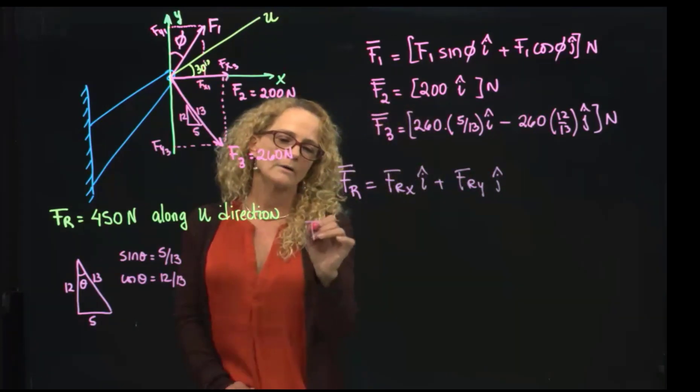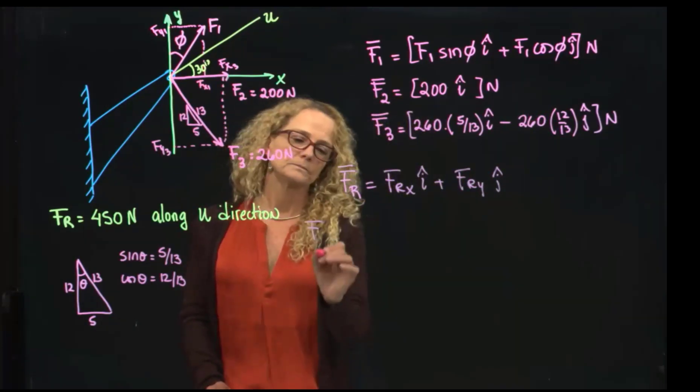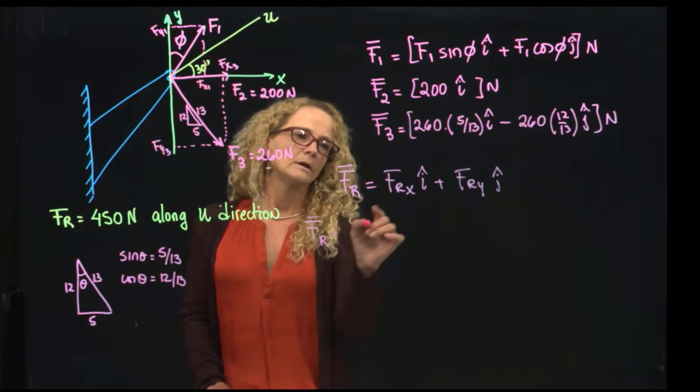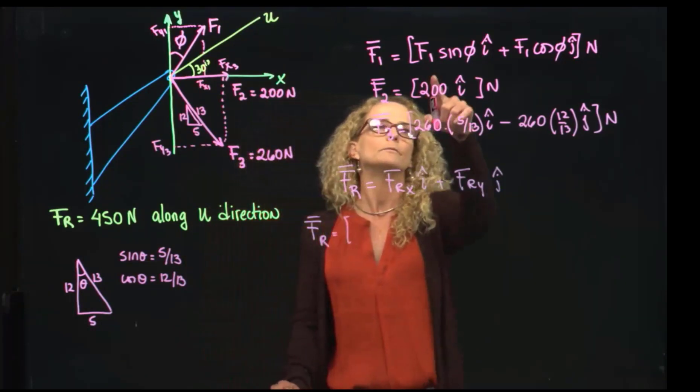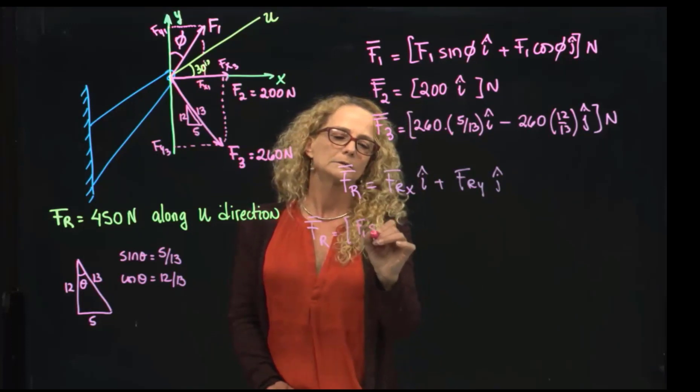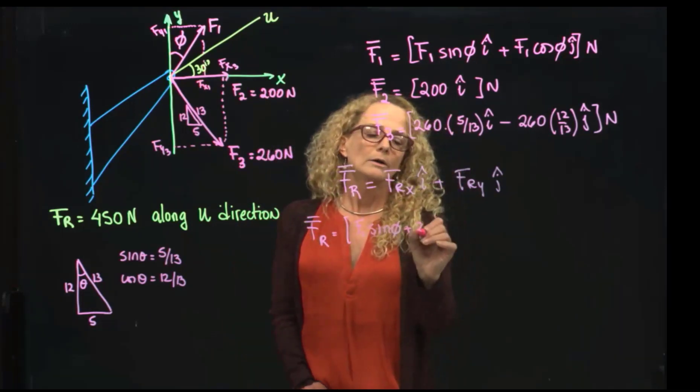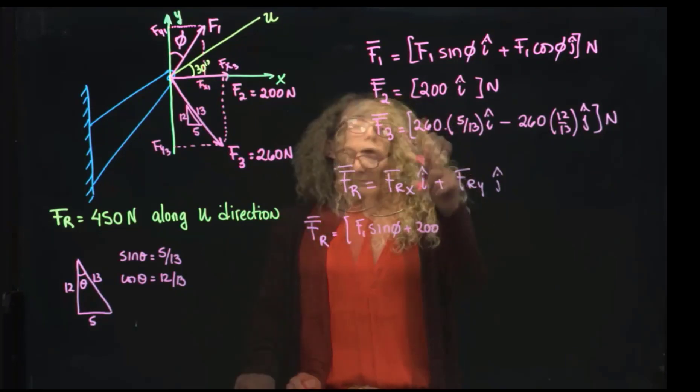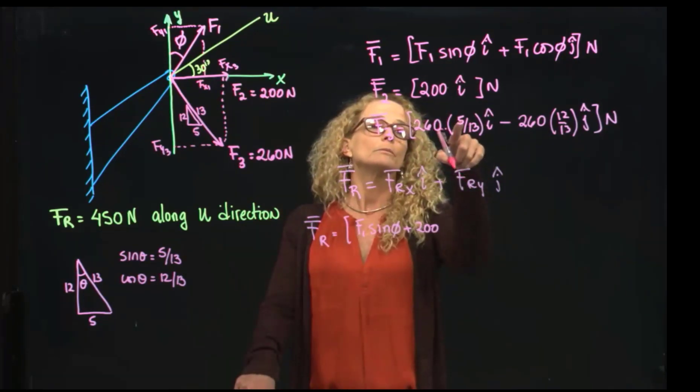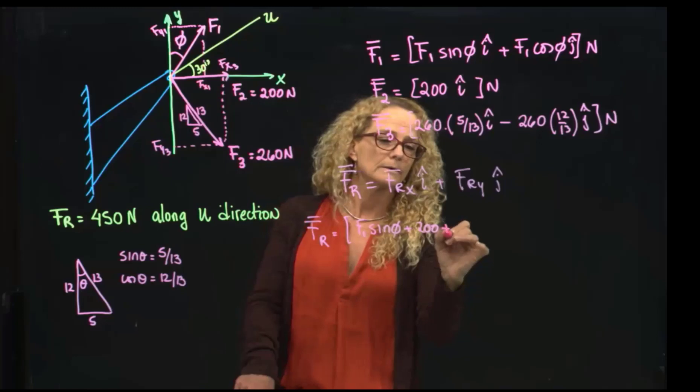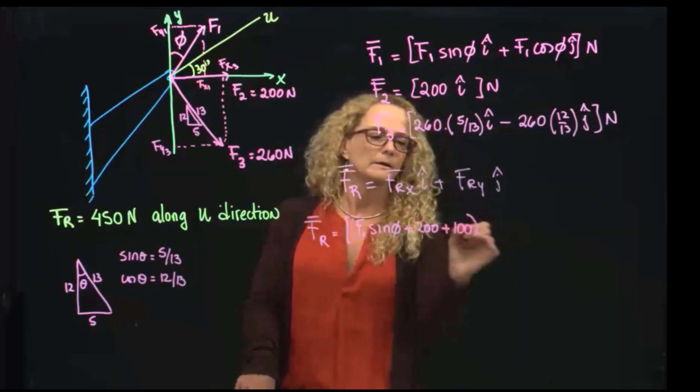So we have that the resultant equals adding the forces in the I-direction, which gives me F1 sine of phi plus 200 plus this one right here. 260 divided by 13 multiplied by 5 is 100, and this is in I-direction.